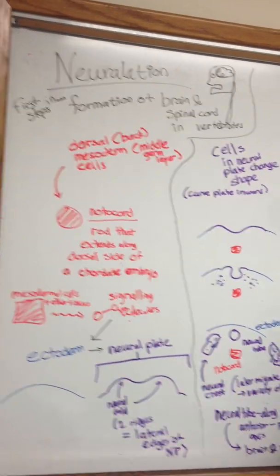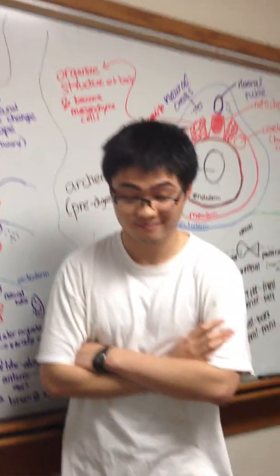This as a whole represents the process of neurulation, formation of the brain and spinal cord in vertebrates. We have three germ layers. Thank you.